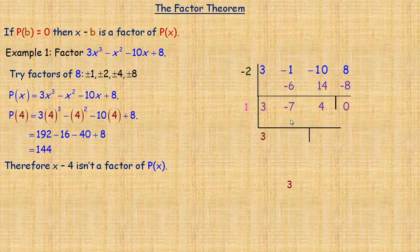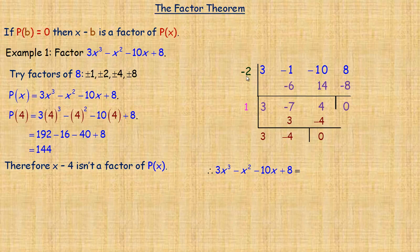Bring the 3 down. 1 times 3 is 3; add to negative 7 to get negative 4. Negative 4 times 1 is negative 4, and we get a remainder of 0 — so x minus 1 is a factor. Writing out all the factors: this cubic polynomial factors into x plus 2, x minus 1, and 3x minus 4. Those are the three binomial factors of this cubic polynomial.